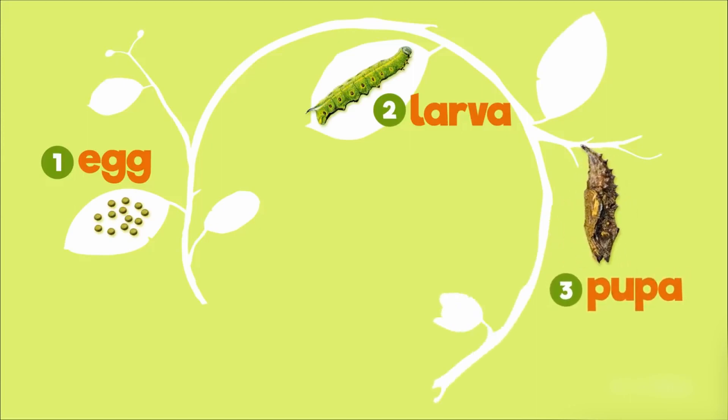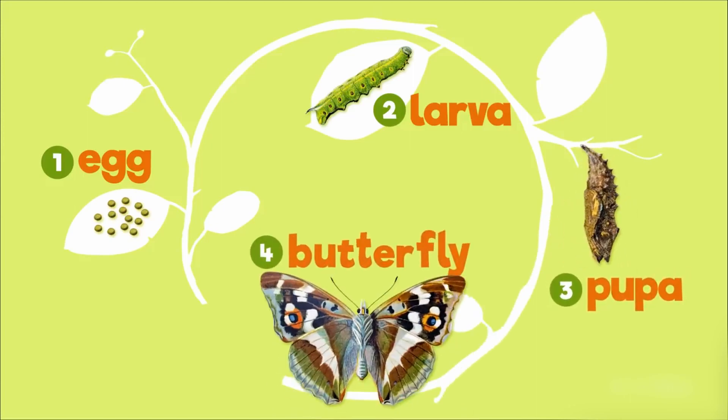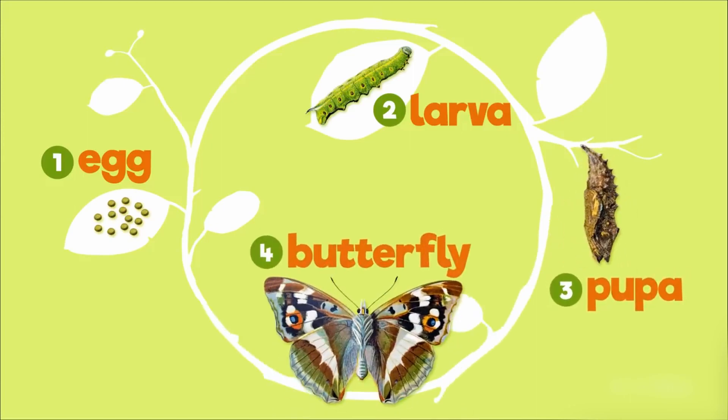Eggs, larva — which we call the caterpillar — pupa, butterfly, and eggs. That's the complete life cycle of a butterfly.